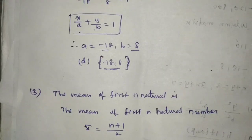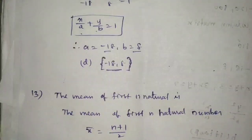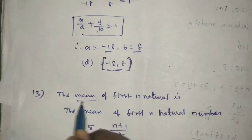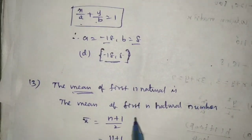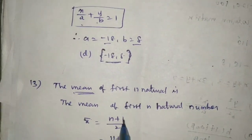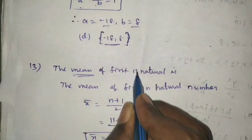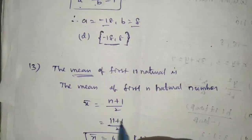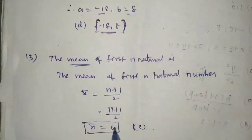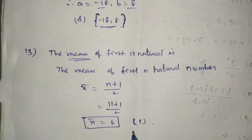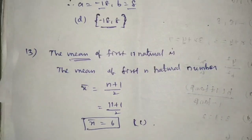Question 13: Mean of first 11 natural numbers. The formula for mean of n natural numbers is (n plus 1) divided by 2. Here n equals 11, so mean equals 11 plus 1 over 2 equals 12 over 2 equals 6. Answer is C option.